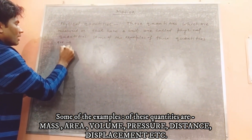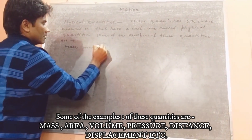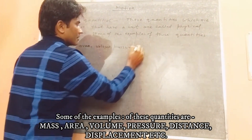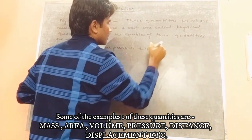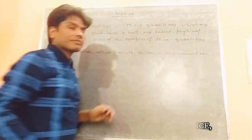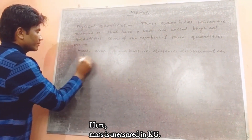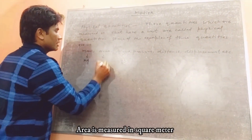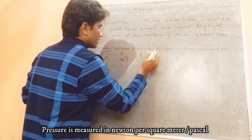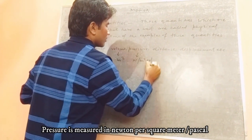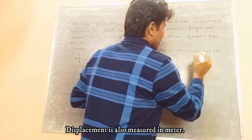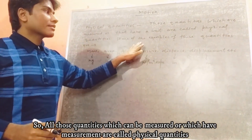Examples of physical quantities are mass, area, volume, pressure, distance, and displacement. Mass is measured in kg, area in square meters, volume in cubic meters, pressure in Pascal, and distance and displacement are both measured in meters.